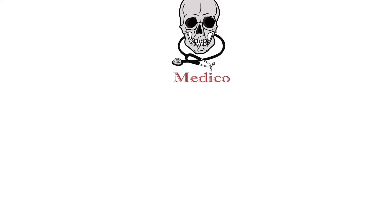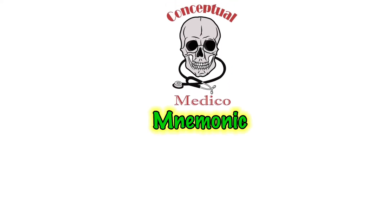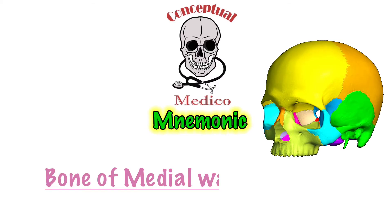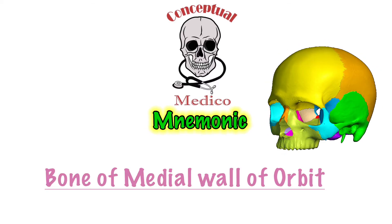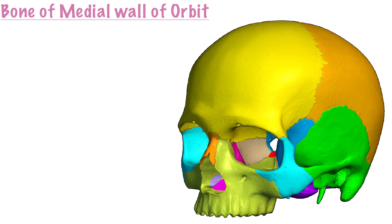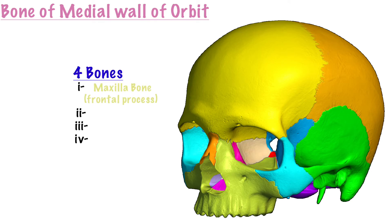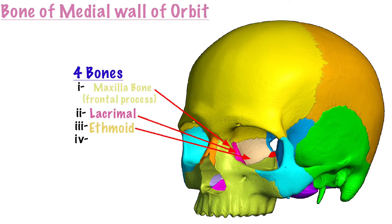In this video, I will teach you a mnemonic that will help you in remembering the bones of the medial wall of the orbit. In the medial wall of the orbit, four bones have contribution: the frontal process of the maxilla bone, the lacrimal bone, ethmoid bone, and the body of the sphenoid.